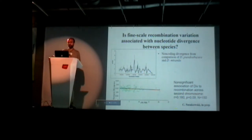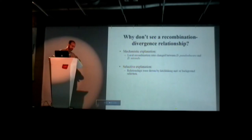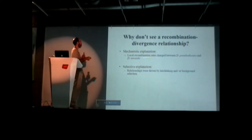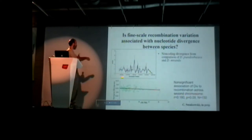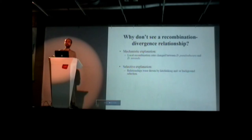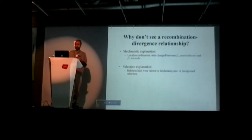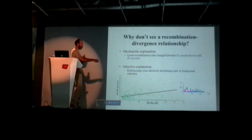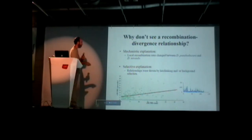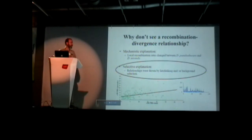So why is it non-significant? There are two possible explanations. First, a mechanistic explanation: maybe the local recombination rates have changed between D. pseudoobscura and D. miranda — perhaps it's a hotspot in D. pseudoobscura but not in D. miranda, so it doesn't reflect the shared evolutionary history. The other possibility is the selective explanation — hitchhiking or background selection. However, we can cross out the mechanistic explanation because we know that recombination rates between D. pseudoobscura and D. miranda are very similar. And we know that recombination rates are positively associated with diversity within both species.